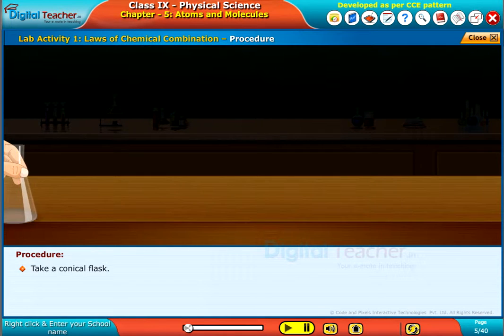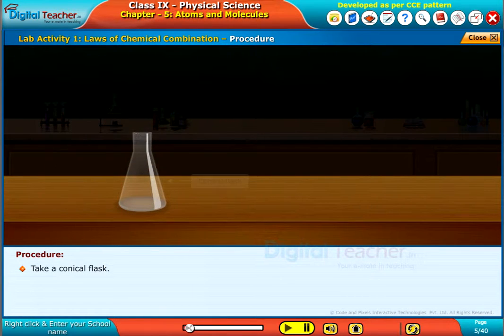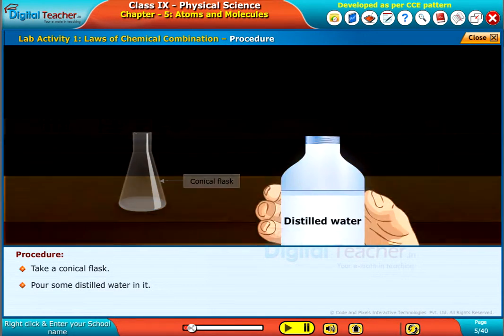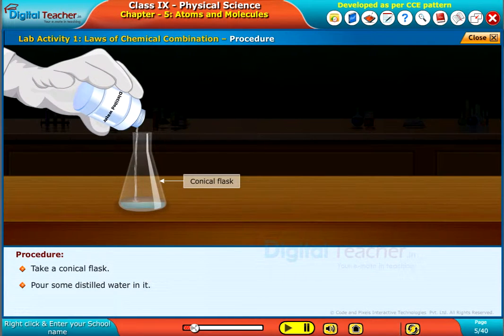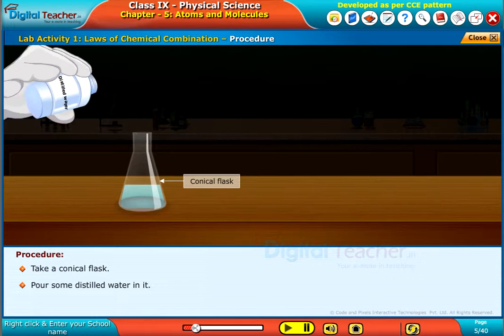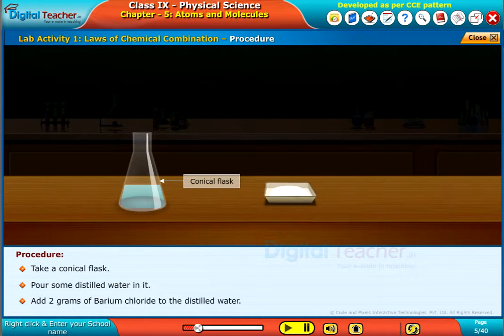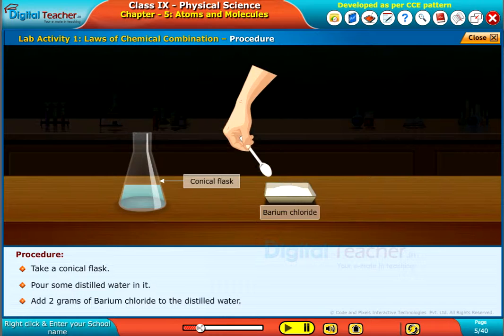Take a conical flask. Pour some distilled water in it. Add 2 grams of barium chloride to the distilled water.